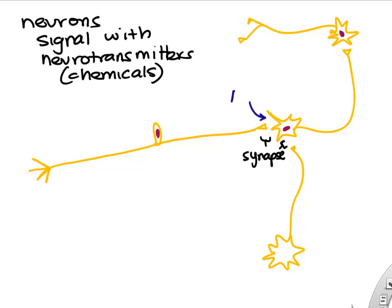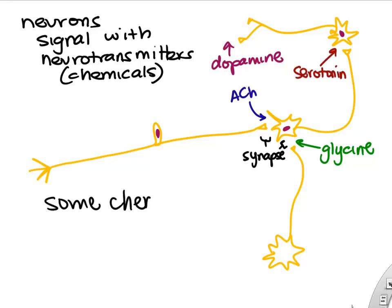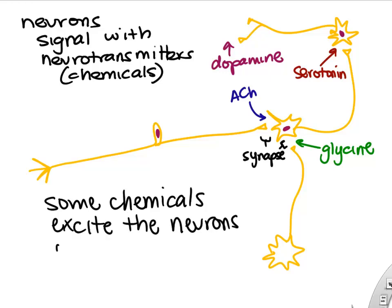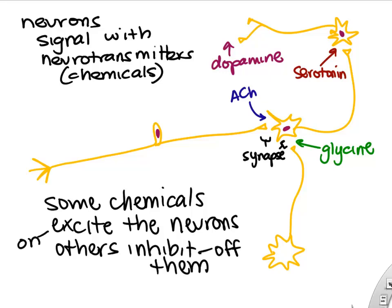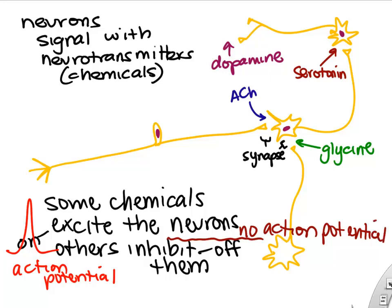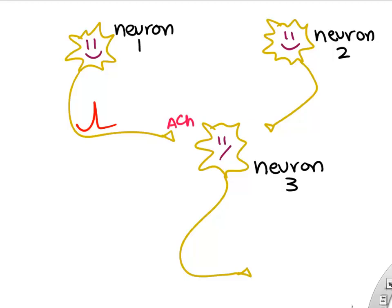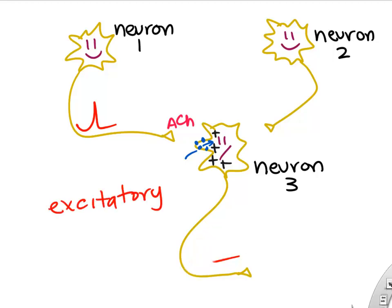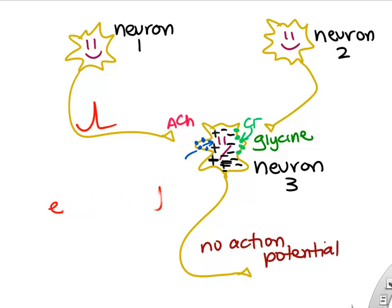The communication between a neuron and another cell is called a synapse. Neurons use chemicals called neurotransmitters to signal to each other — some chemicals excite neurons and others inhibit them. An inhibitory neurotransmitter shuts down neurons; an excitatory one turns them on. For example, neuron one releases acetylcholine, which causes an action potential in neuron three — that's excitatory. Neuron two releases glycine, causing chloride to enter neuron three, shutting it down — that's an inhibitory signal.